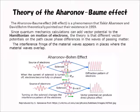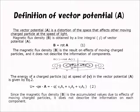The interference fringe of the matter waves appears in places where the matter waves overlap. The vector potential is a distortion of space that affects other moving charged particles at the speed of light. Magnetic flux density is obtained by a line integral of vector potential. The magnetic flux density is the result of the effects of moving charged particles, and it does not fully describe the information contained in the vector potential.